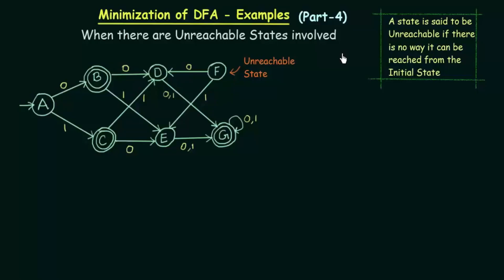In the previous lectures we have seen different examples of minimization of DFA. In this lecture we will be seeing another example of minimization of DFA when there are unreachable states involved. Before we start, let us try to understand what is an unreachable state. A state is said to be unreachable if there is no way it can be reached from the initial state.